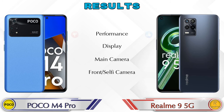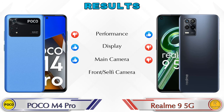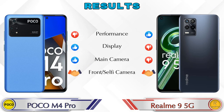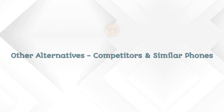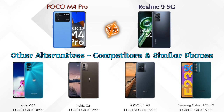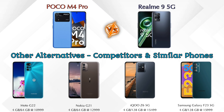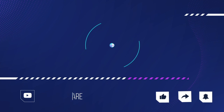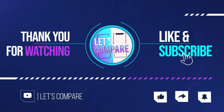Finally, the results: in performance, Realme 9 5G is ahead; in display, Poco M4 Pro is ahead; in main camera, Poco M4 Pro is ahead; in front selfie camera, both phones are the same. Other competitors at the same price include Moto G22 4G, Nokia G21, iQOO Z6 5G, and Samsung Galaxy F23 5G. Details about all competitor phones are available in the description. If you liked our video, please like and subscribe — thanks for watching.